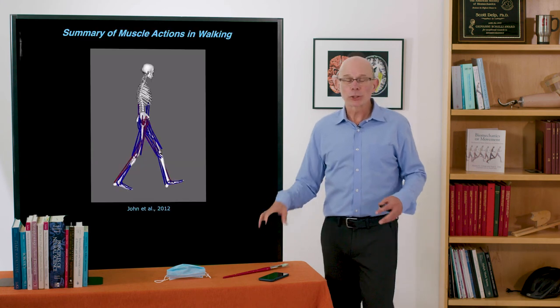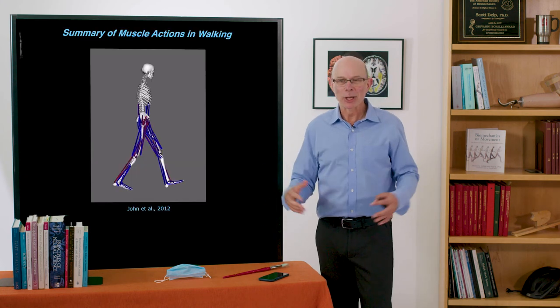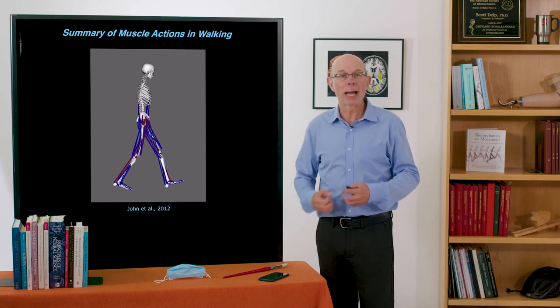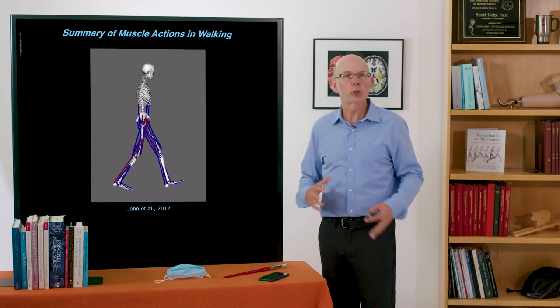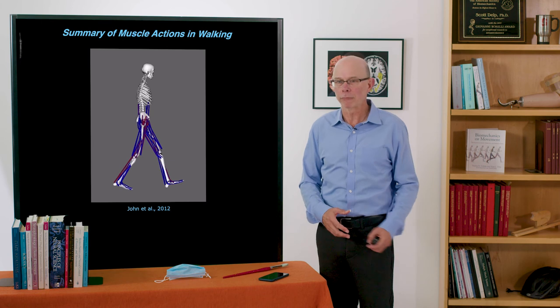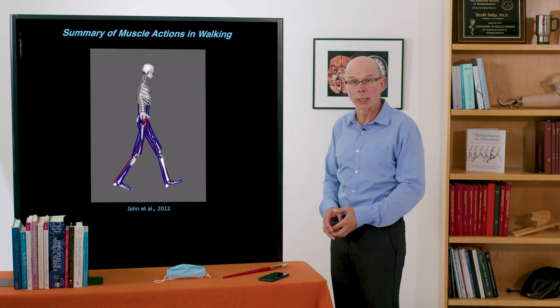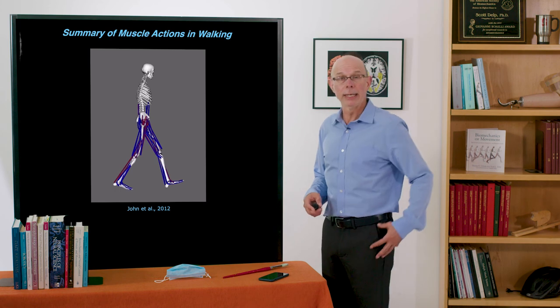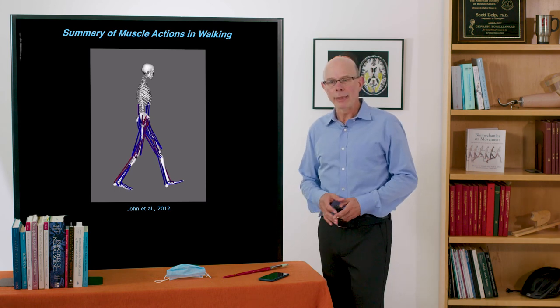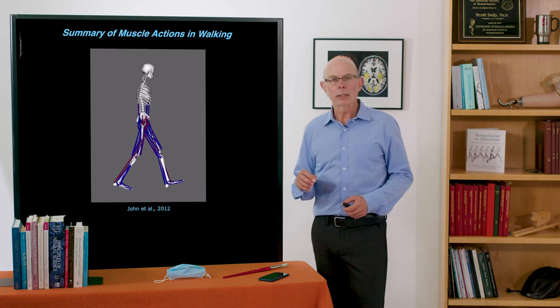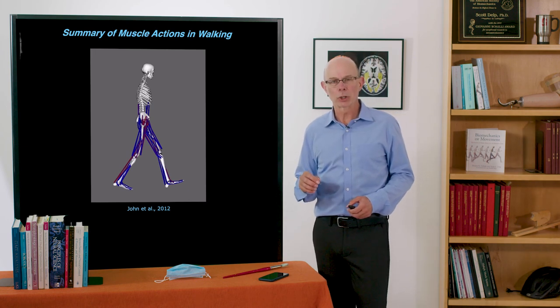So that's just three of the many muscles. If you have a simulation, you can study the action of any of these muscles on the mass center acceleration and on the joints. You can figure out what the hamstrings are doing at the hip and at the knee. You can figure out what the soleus muscle is doing, not just for body weight support but how it's extending the knee and extending the hip as well. And these simulations provide a detailed summary that lets you analyze muscle function in great detail.